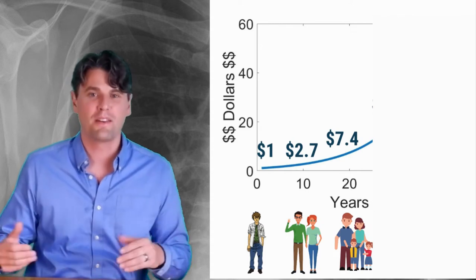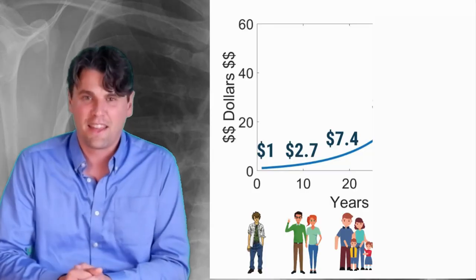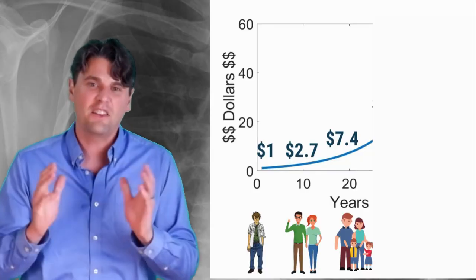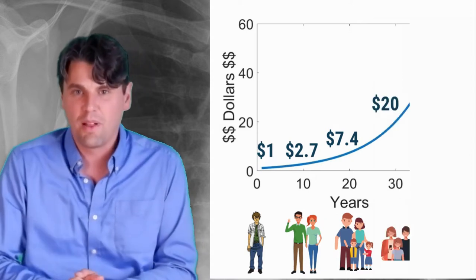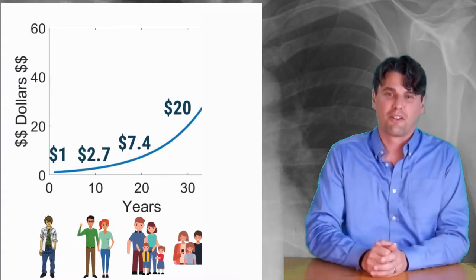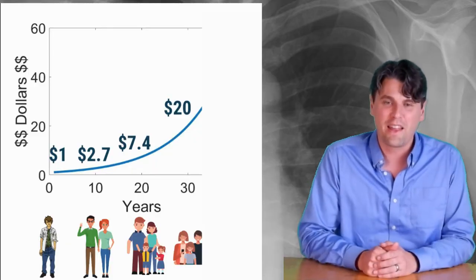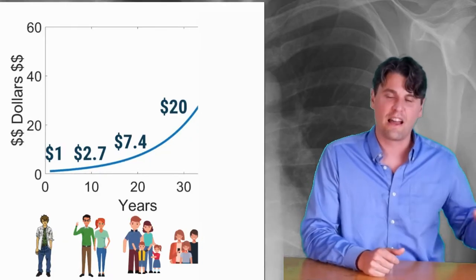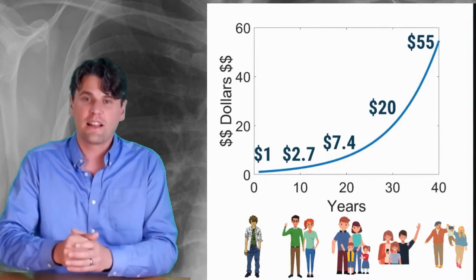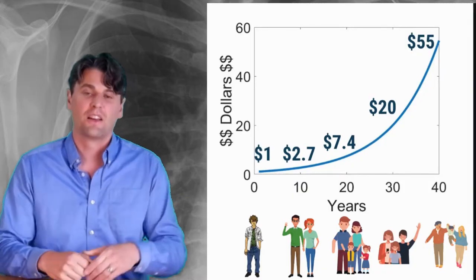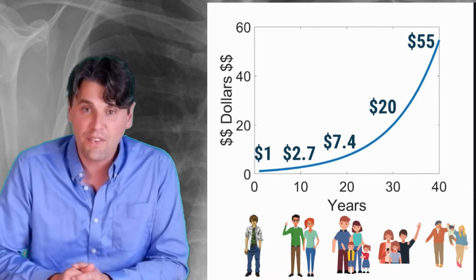At 40 years old, maybe you've got a kid or two, and you've got $7.40 in that account growing reliably over time. At 50 years old, you're wrestling with older kids, not quite as little and cute. You've got $20 from that initial dollar. Then at 60, when you'd like to retire, you've got $55. You started with just $1, remember? And now you have $55.